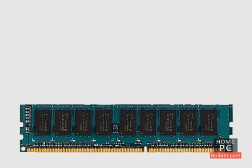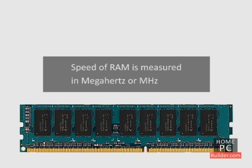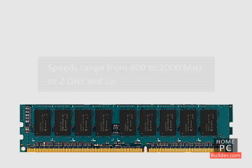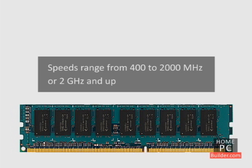The speed of the RAM is also important. The speed of memory is measured in megahertz, or MHz, and ranges from 400 megahertz to 2000 megahertz, or 2 gigahertz, and up. Generally, you should get the fastest RAM the motherboard you choose can handle.